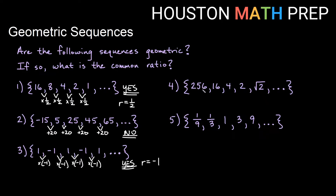For this one: 256, 16, 4, 2, square root of 2. You look at this and see it's getting smaller — dividing by some stuff. If you actually figure out the pattern, it turns out we're taking the square root each time. The square root of 256 gives me 16, the square root of 16 gives me 4, the square root of 4 gives me 2, and so on. But the issue is it's not multiplying by the same thing.